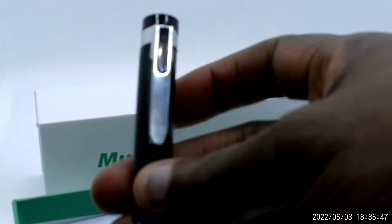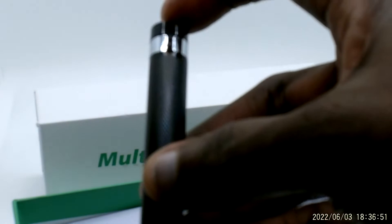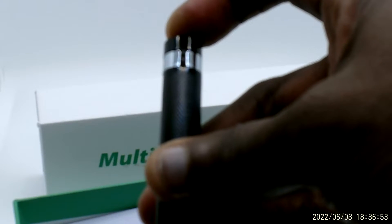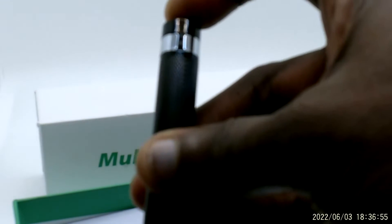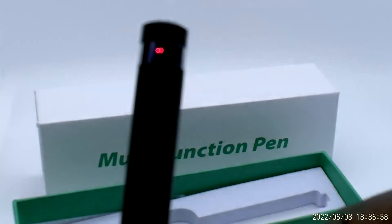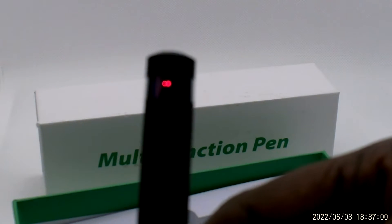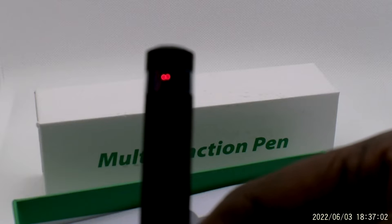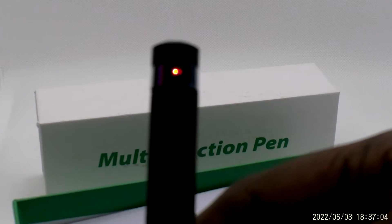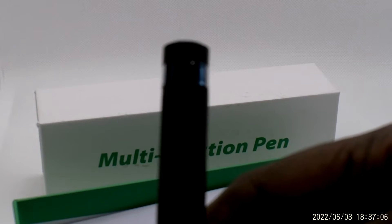When you are ready to start, this is the actual camera here. You want to press this button once. Let's see if I can get the light to come on. There you go. When the red light comes on, that means that it is filming now. So this is how you would actually work the pen, but as you can see the light went out.